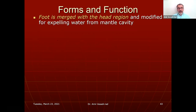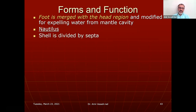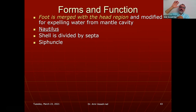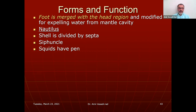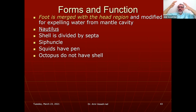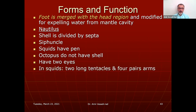Some cephalopods do not have a shell, and some have poison glands. They have chitinous beaks inside the mouth that crush their prey — chitin is a sugar molecule with nitrogen attached. The nautilus shell is divided by septa connected together by siphuncles — a small opening from one septum to the next. Squids have an internal shell called a pen. Octopus have no shell, and their eyes can form images.